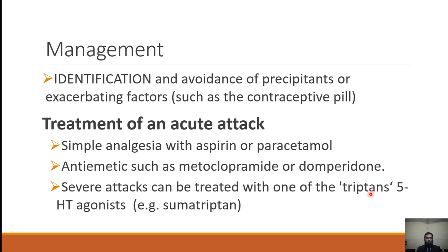Management of migraine includes identification and avoidance of precipitants. For acute treatment, simple analgesia should be used first — aspirin and paracetamol. If these don't respond, more potent NSAIDs like naproxen can be used. Because there is always gastroparesis during a migraine attack and oral medications are not well tolerated, metoclopramide can be used to increase gastric motility and address vomiting, improving drug absorption. Sumatriptan or zolmitriptan — 5-hydroxytryptamine agonists — can abort an acute migraine attack.